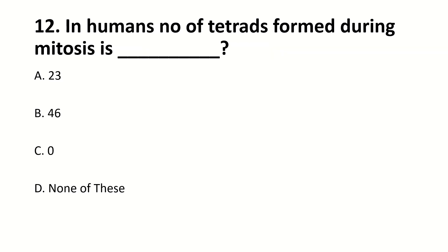In humans, the number of triasters formed during mitosis is ___. The right answer is C: zero.